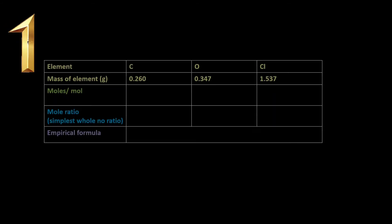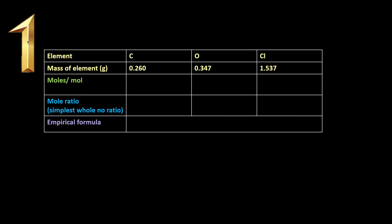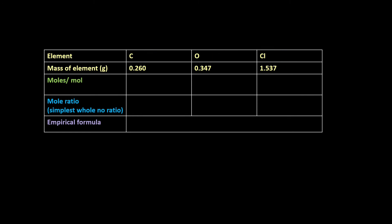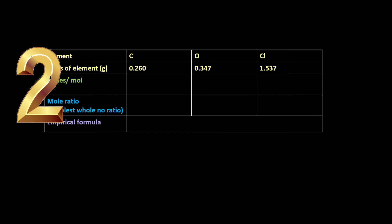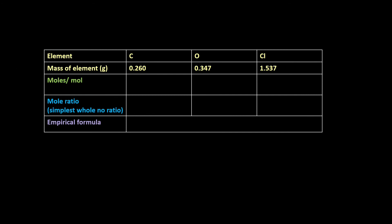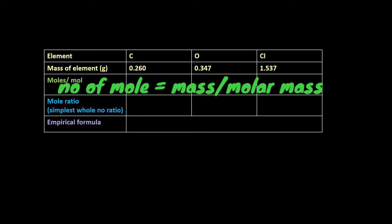Step 1 is to construct a table for elements, mass, moles, mole ratio, and empirical formula. The elements given are carbon, oxygen, and chlorine, so we fill those in along with their given masses. Step 2 is to calculate the moles for each element using the formula: moles equals mass divided by molar mass.